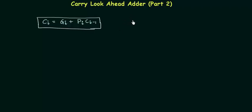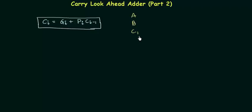At the start of the addition you have number A, the first number, and number B, the second number you want to add. You also have c-1, which is the carry input to your first half adder — if there is any carry from previous additions. Using these three pieces of information, we try to calculate the sum and carry as soon as possible.